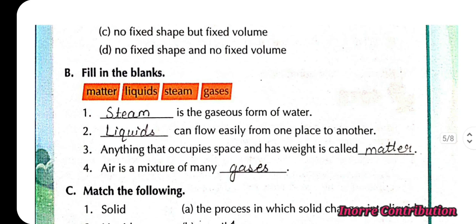Next exercise, B, fill in the blanks. First one, steam is the gaseous form of water. Second, liquids can flow easily from one place to another. Third, anything that occupies space and has weight is called matter. Fourth one, air is a mixture of many gases.